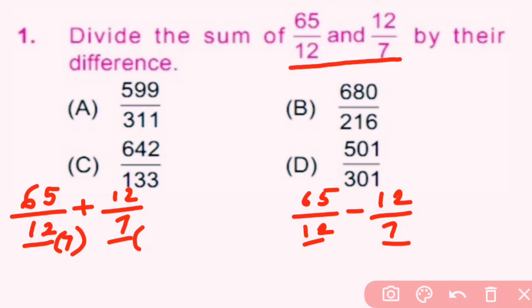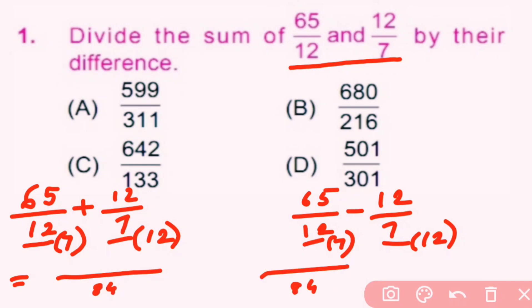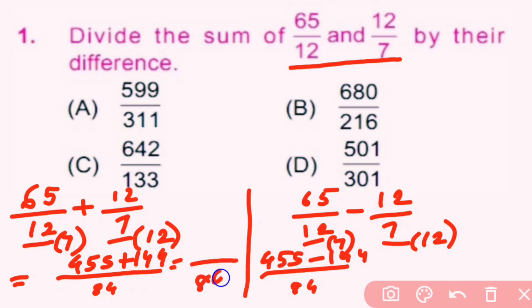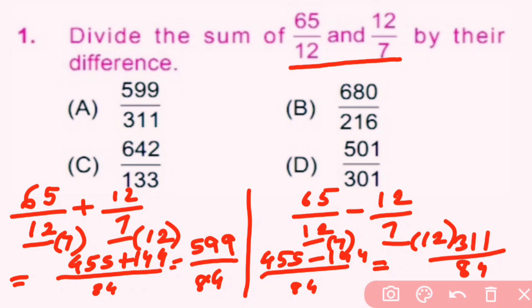We multiply by 7 and by 12 to get a common denominator of 84. So 65×7 = 455 and 12×12 = 144. Therefore 455 + 144 = 599 and 455 − 144 = 311.